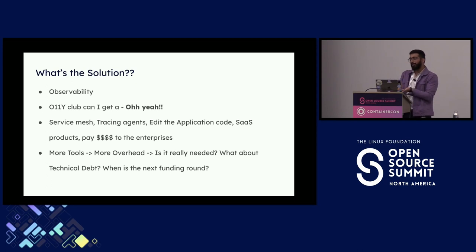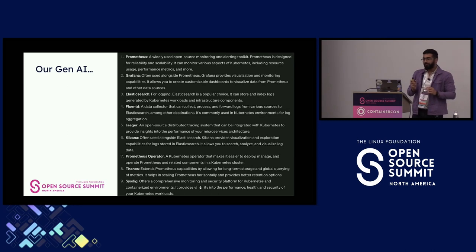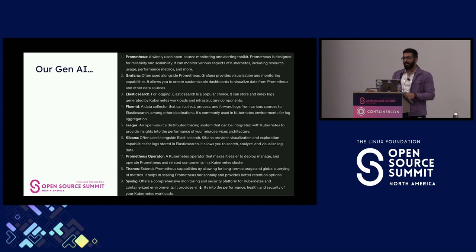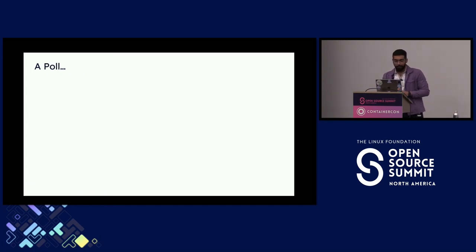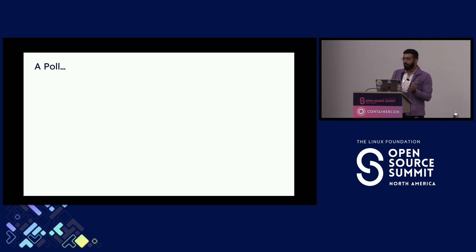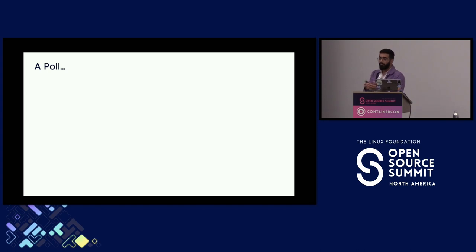I asked ChatGPT and it returned a lot of tools: Prometheus, Grafana, Elasticsearch, Fluentd, Jaeger, Kibana, Sysdig — the list was about 20. I did a poll on LinkedIn asking how many tools people use in production. Around 35% said just one, mostly Prometheus. Tools like Datadog, Splunk, and New Relic were in the one-to-four range. Some four percent used more than four tools in production.